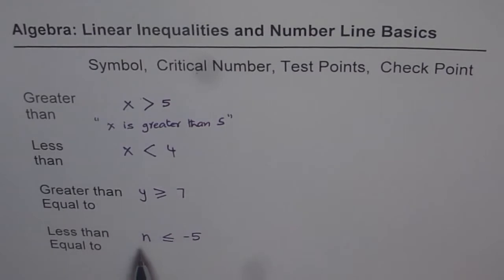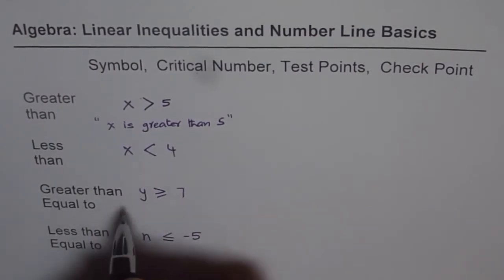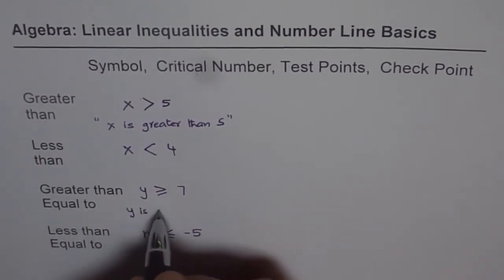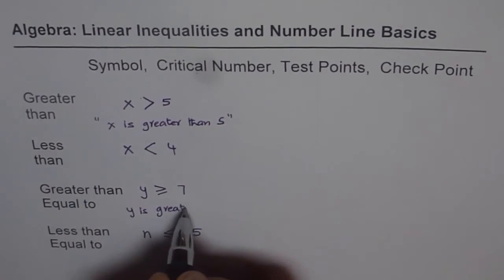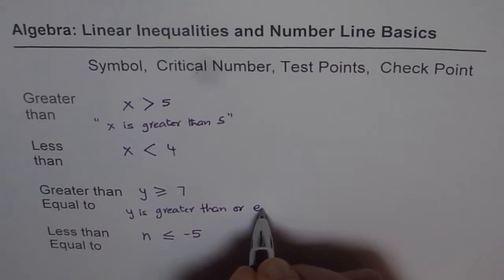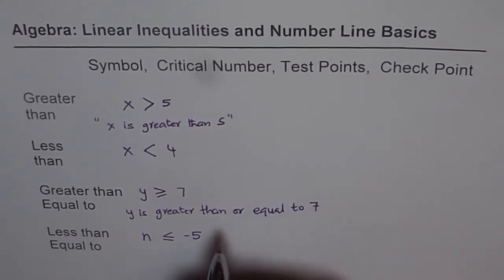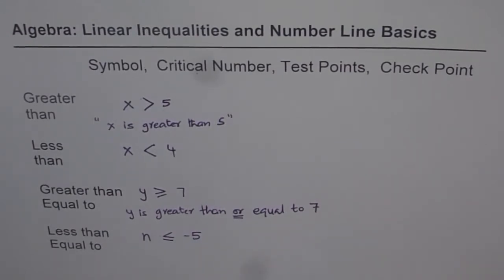The last one we can read as n is less than or equal to minus 5, or y is greater than or equal to 7. Remember, it is 'or' — so y is greater than or equal to 7 means 7 is also a part of our solution. That is what we need to understand.